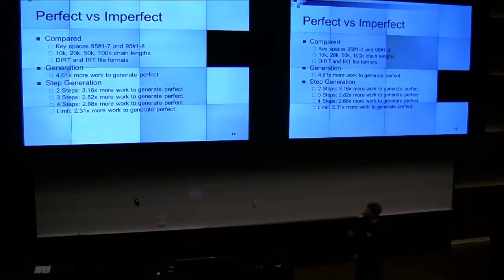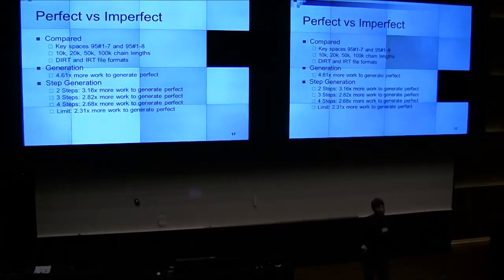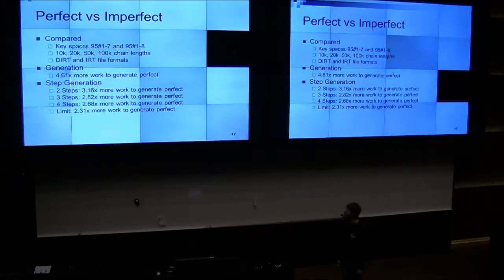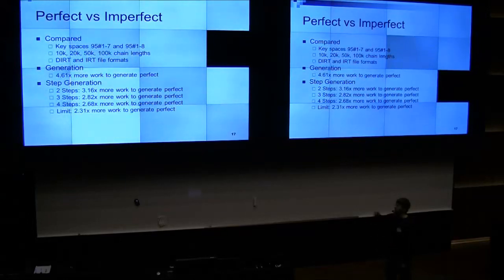Now that we know file formats, perfect and imperfect, we're going to compare them. I compared two different key spaces — 95 characters, one through seven length and one through eight — with 10,000, 20,000, 50,000, and 100,000 chain lengths, in DIRT and IRT formats. Generation time between perfect and imperfect: perfect takes 4.6 times longer, but with step generation that can be decreased to 3.2 — or two steps to 2.7. The limit is 2.3.